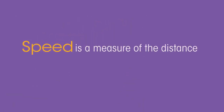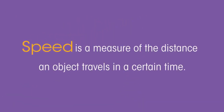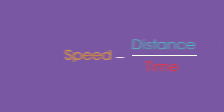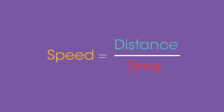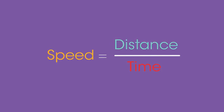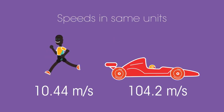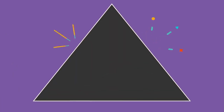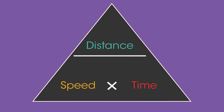Speed is a measure of the distance an object travels in a certain time. Speed can be calculated using the formula: speed equals distance traveled divided by time. The formula can also be written in a formula triangle.